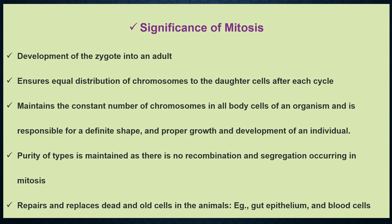Now we'll talk about the significance of mitosis — why is it so important in the body of an organism? Mitosis leads to the development of the zygote into an adult; the zygote will divide and grow into an adult by virtue of mitosis. It ensures equal distribution of chromosomes to the daughter cells after each cell cycle. It maintains the constant number of chromosomes in the body cells of an organism and is responsible for a definite shape, proper growth, and development of an individual. The purity of types is maintained by virtue of mitosis as there is no recombination and segregation occurring, so no combination of two parental traits gives rise to a new trait.